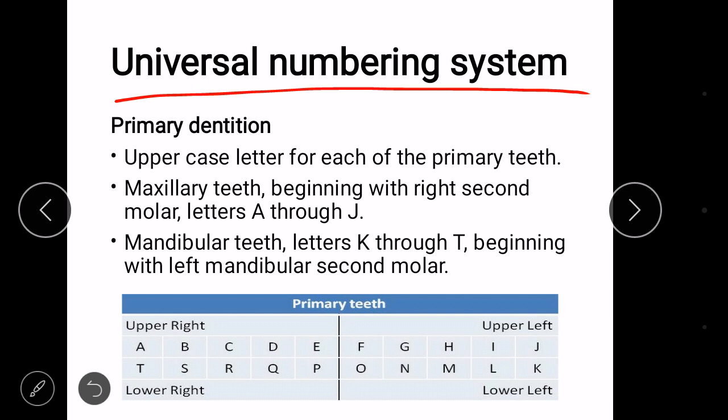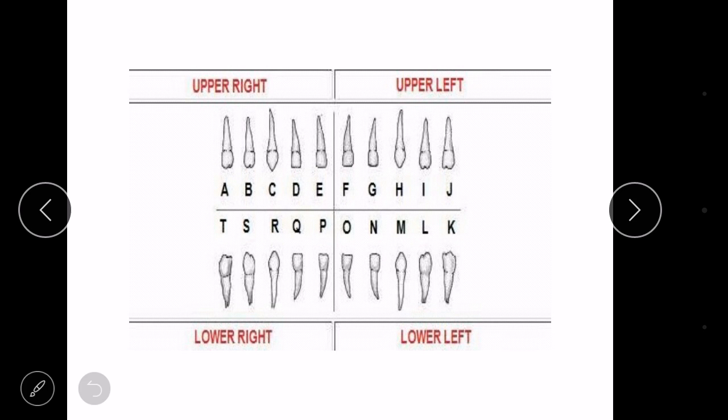In universal numbering system, alphabets and numbers are denoted to every tooth in the mouth. Primary dentitions are donated with uppercase alphabet A to T. Now, these alphabets move in a clockwise direction where it starts from A, that is maxillary right second molar, then comes to J, that is maxillary left second molar.